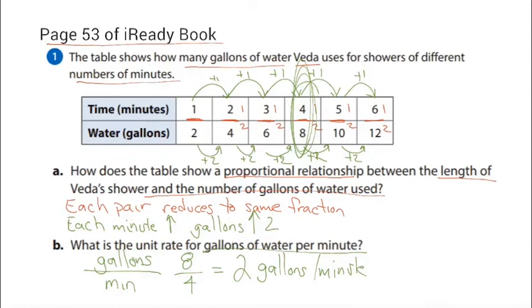The unit rate in gallons per minute: I write down gallons over minutes, pick any one of my columns. I write down the numbers for gallons, which in my case was eight. The number of minutes was four. I do the division, and that tells me two gallons per minute.